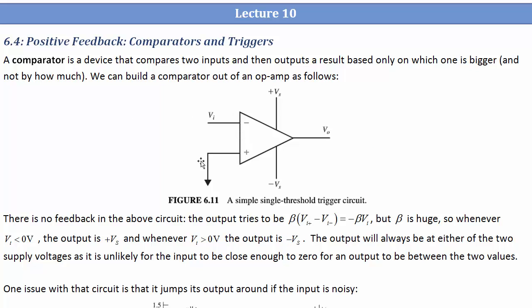So what does this do? This compares the input to 0. It just says, is the input negative? If the input's negative, then it outputs positive Vs for yes. If the input is positive, it outputs negative Vs, meaning no, it wasn't negative.